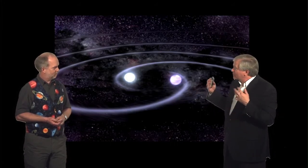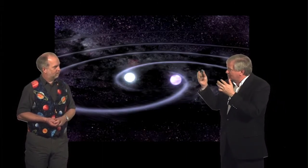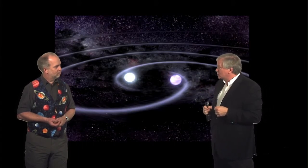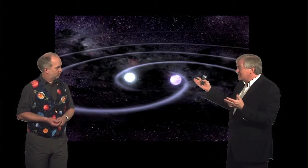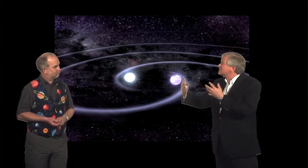And so a gravitational wave is where space gets bigger and smaller. And so that, of course, is energy that's leaving the system, which means that the orbits have to get closer and closer so as to conserve energy. And so that can, over billions of years, bring these two massive objects together.